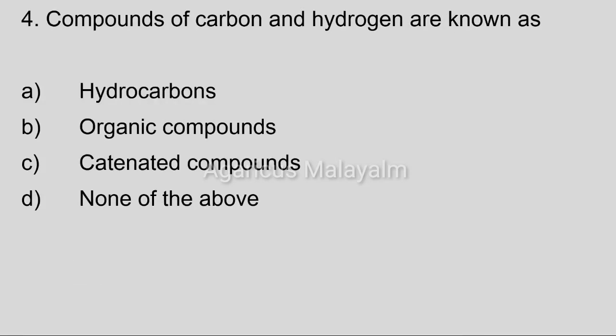Fourth question: Compounds of carbon and hydrogen are known as — Option A: hydrocarbons, Option B: organic compounds, Option C: catenated compounds, Option D: none of the above. Correct answer: Option A, hydrocarbons.